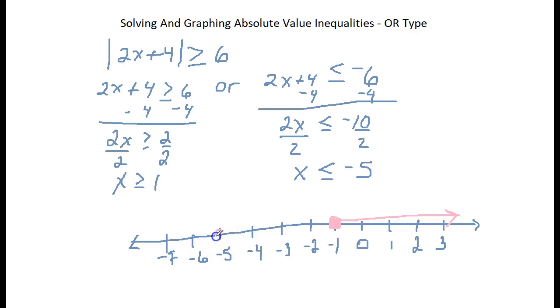I circle my negative 5. The symbol is underlined, so I shade in the circle. And the numbers less than or equal to negative 5 go this direction.